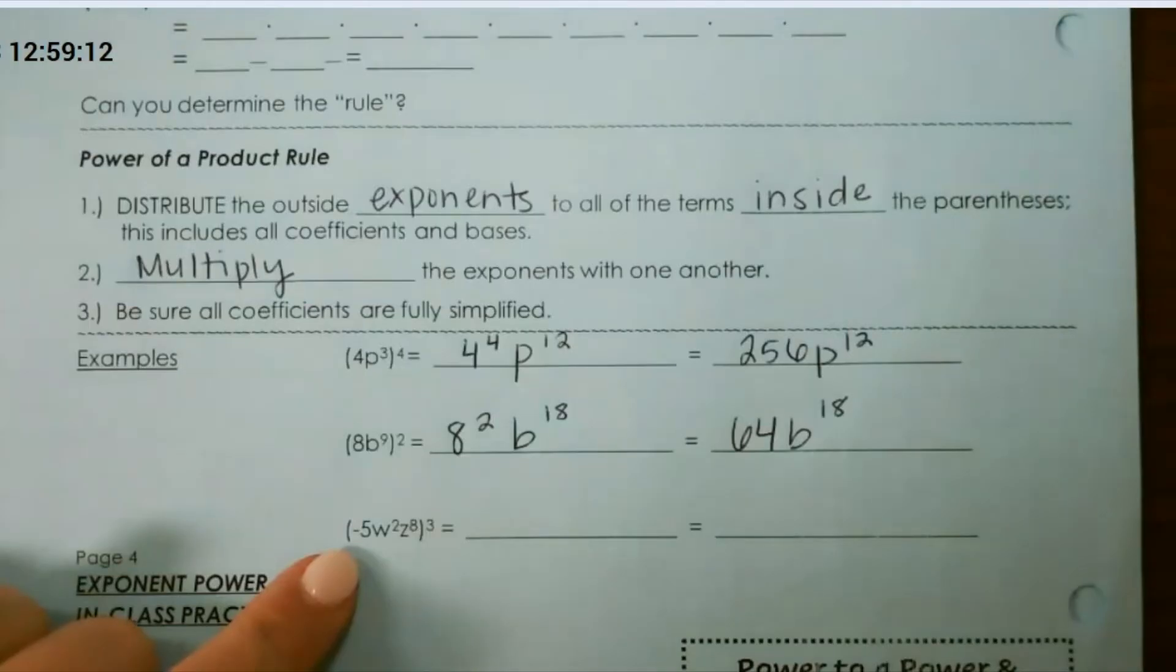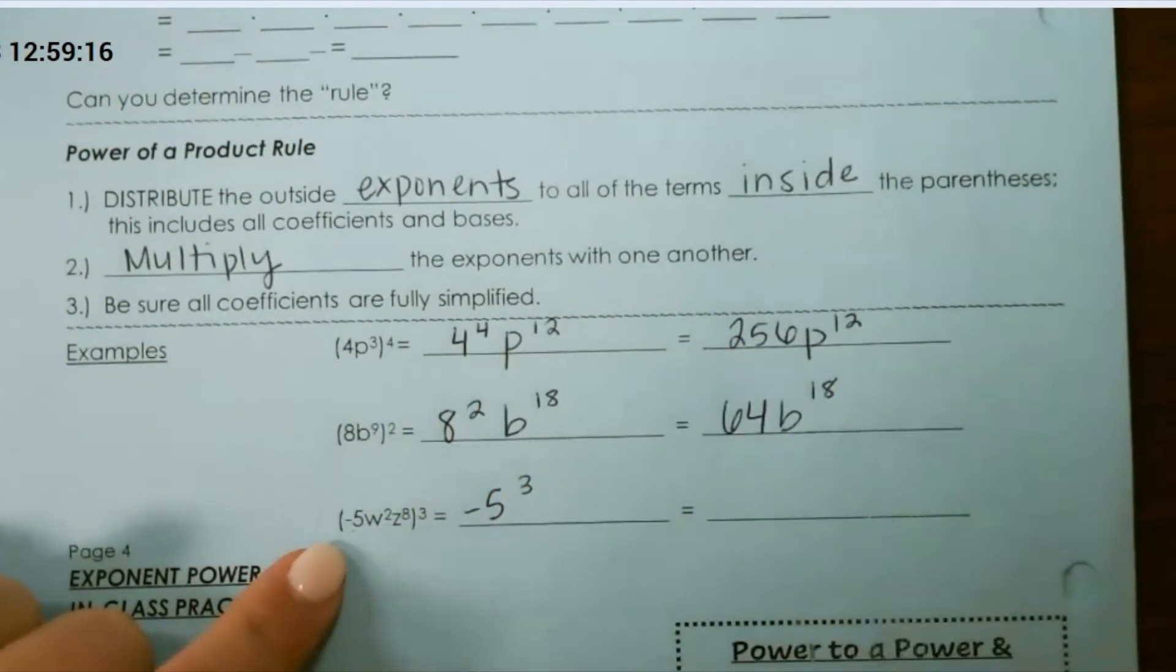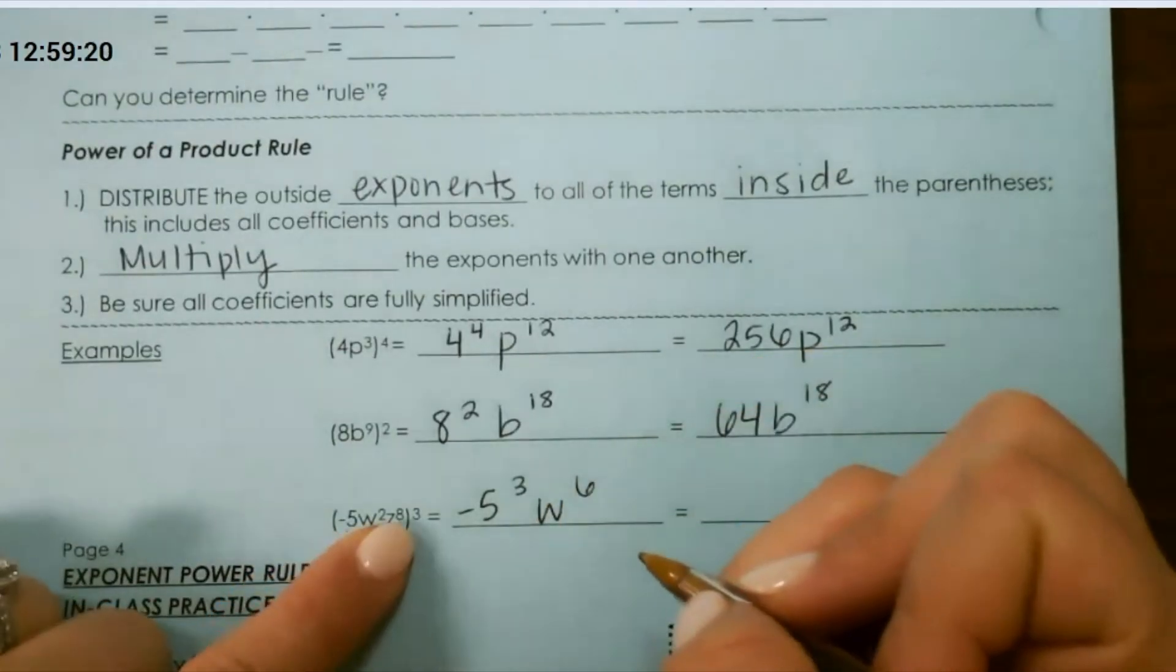And for our last example, we would have negative 5 to the third power, w to the sixth power because 2 times 3 is 6,